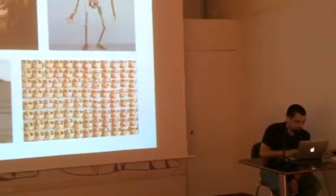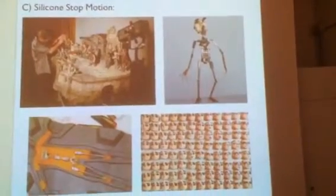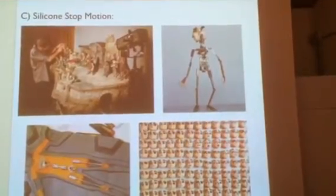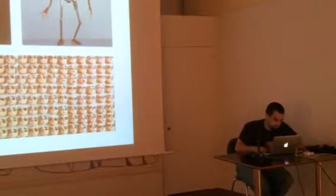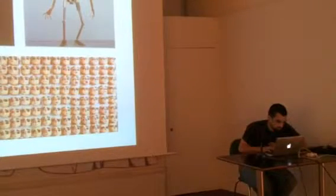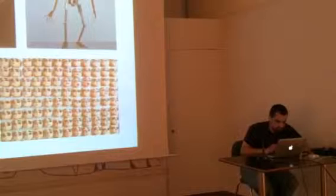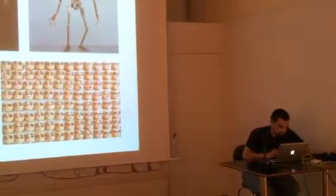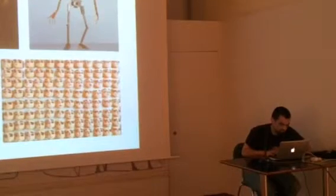And in the last category: silicone stop motion. This is a type of stop motion where the characters are far more elaborate and complicated to make. They model different facial expressions for each character, offering an infinite range of movement possibilities thanks to an internal metal skeleton.